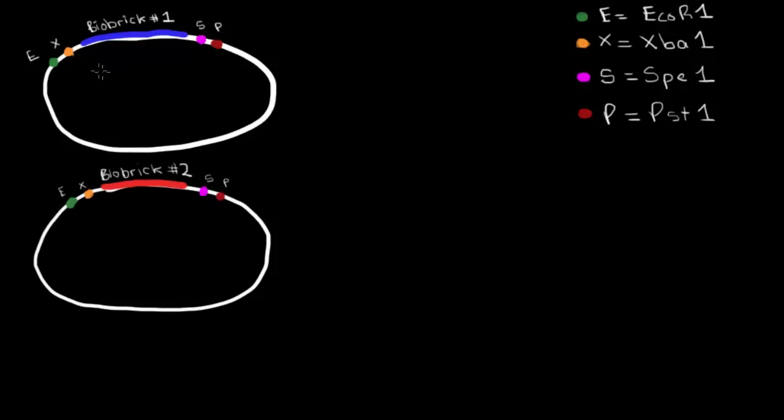And we do this so that you're able to put biobricks next to one another and reform these sites on either side. The reason that we can do this is because, for example, when you cut with ECOR1, you can expect that the sticky overhangs that are produced wouldn't match with PST1. So if you cut with ECOR1 and PST1, the overhang from PST1 isn't about to get back together with an ECOR1. You're not going to be able to close the plasmid that way.